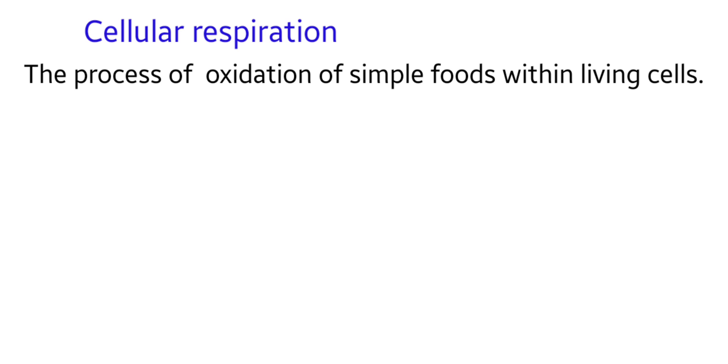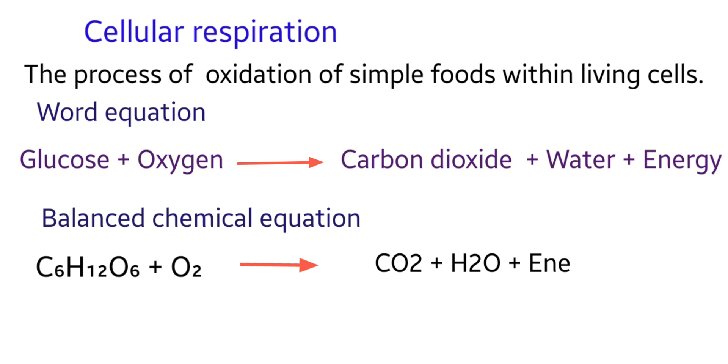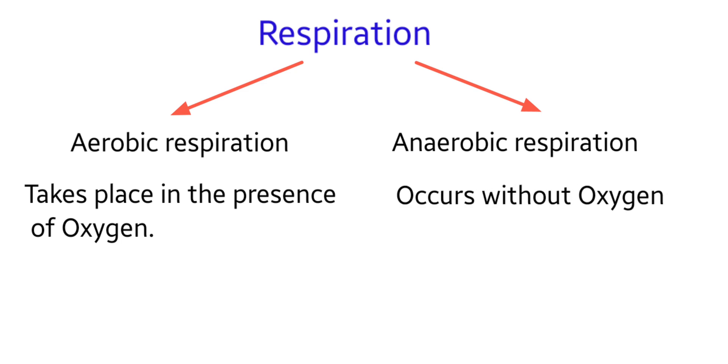The third stage of the respiration process in humans is cellular respiration. Cellular respiration is the process of oxidation of simple foods within living cells. Glucose combines with oxygen to produce carbon dioxide, water, and energy. According to the requirement of oxygen, two types of respiration take place: aerobic respiration, which takes place in the presence of oxygen, and anaerobic respiration, which takes place without oxygen. Aerobic respiration releases all the available energy within each glucose molecule, but anaerobic respiration does not completely break down glucose into carbon dioxide and water.